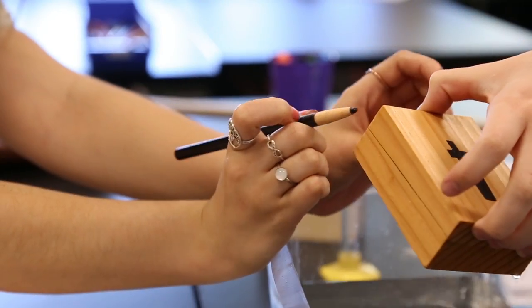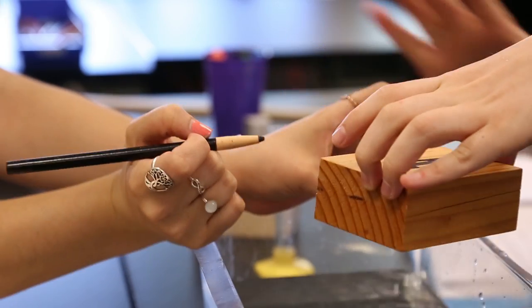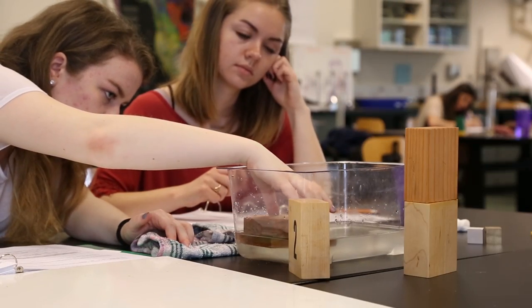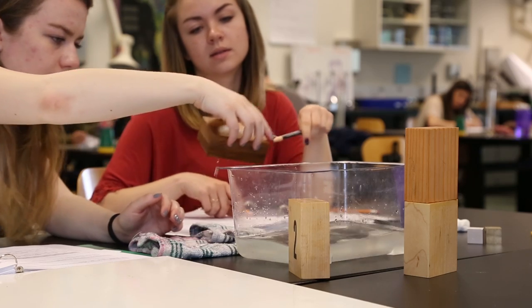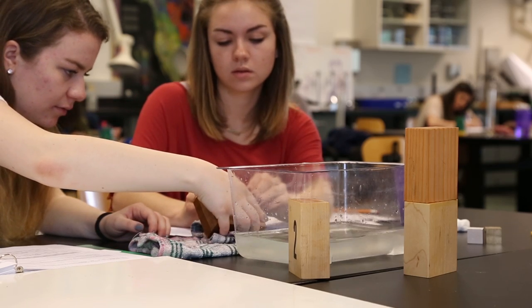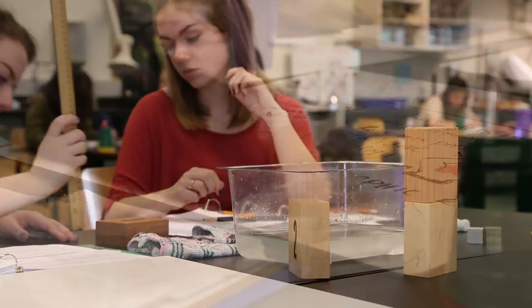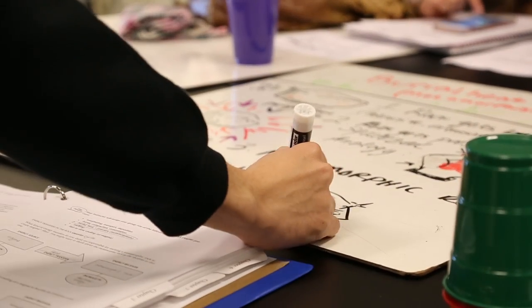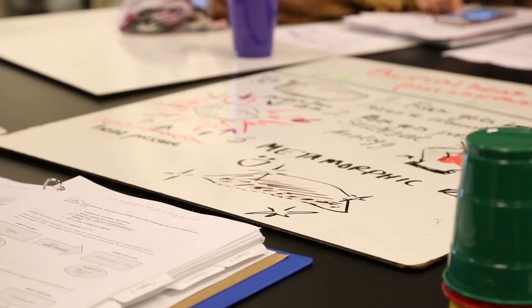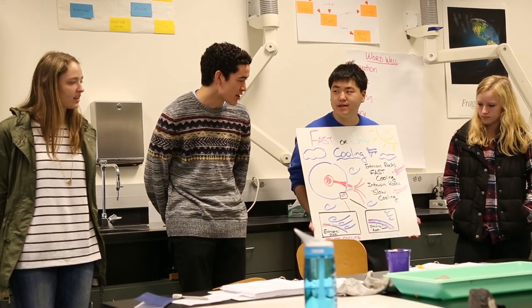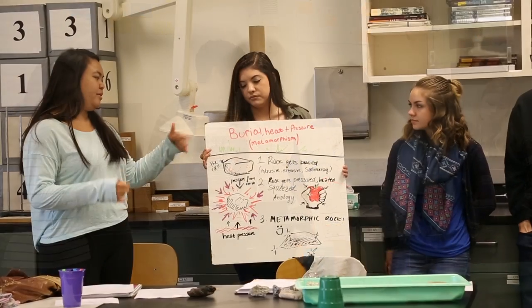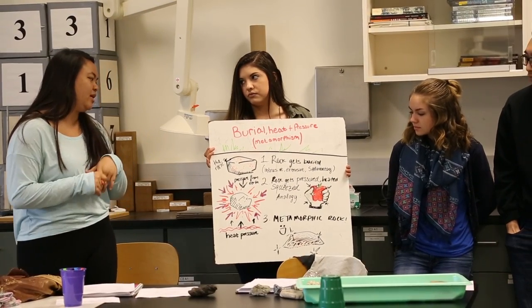A lot of the collaborative work takes place around whiteboarding. Students will do some kind of activity and then they'll be asked to develop their understanding of what that means conceptually. Students work in small groups of three and are eventually asked to share their thinking with the rest of the class. They write their ideas on a whiteboard, and there'll be a particular prompt where multiple groups will stand up with their whiteboard and share their thoughts.